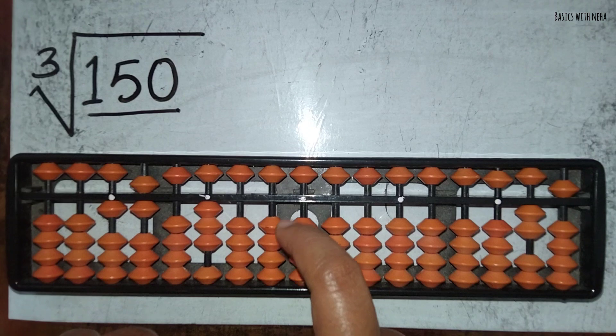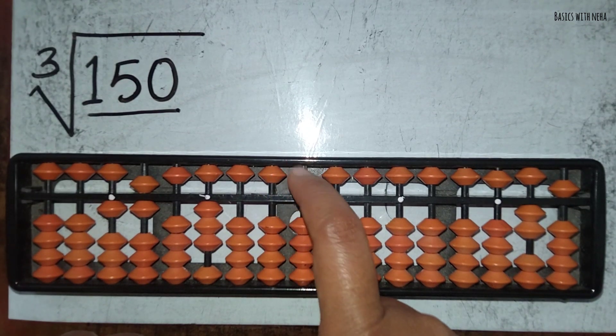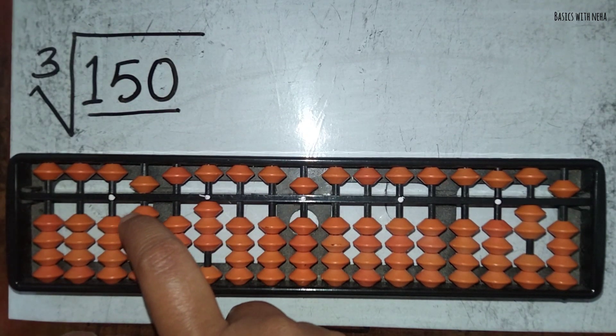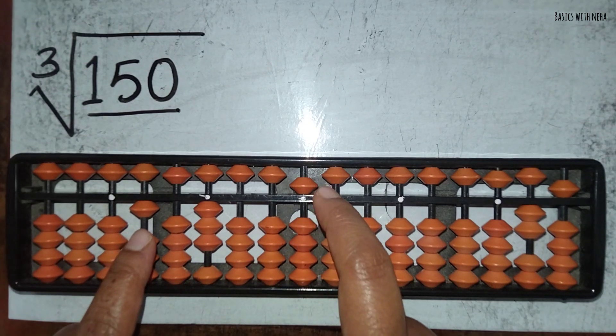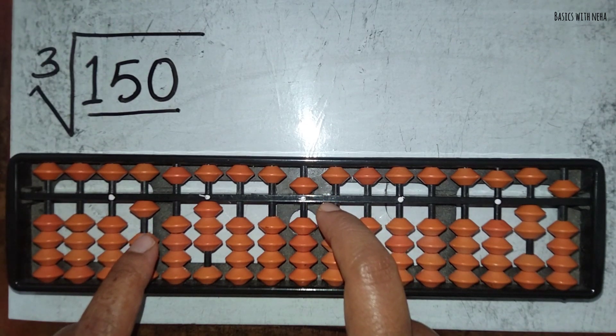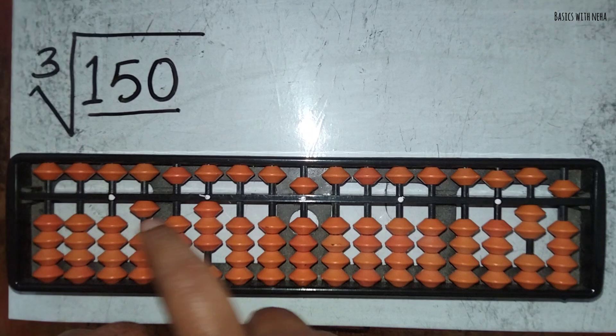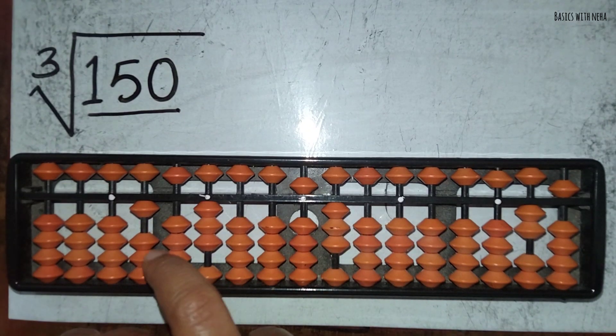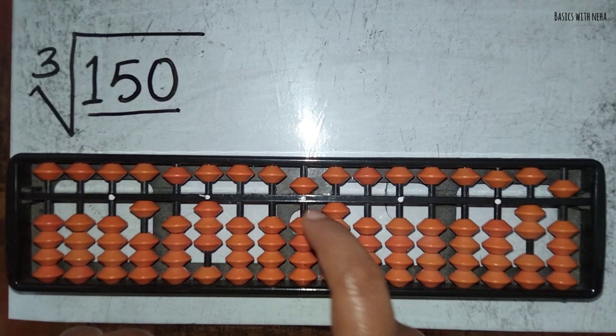So 3 fives are 15, 3 fives are 15, 1, 5, 15. Now whatever comes after this is the decimal place, so I have 10, so it will be 3, 3s are 9. So ideally my answer would come around 5.3.